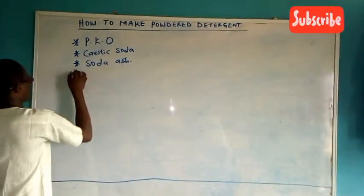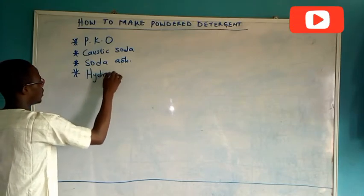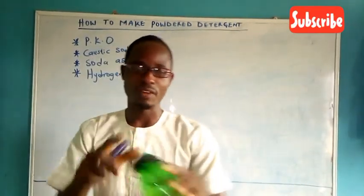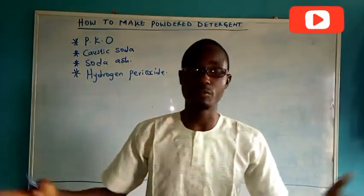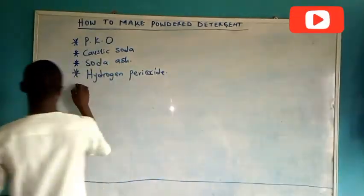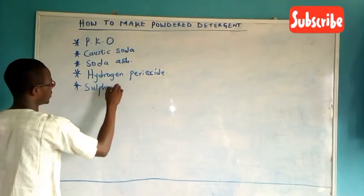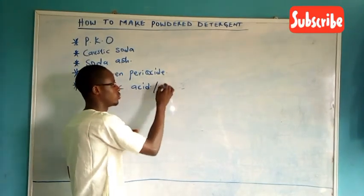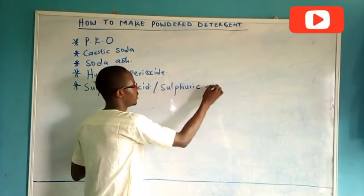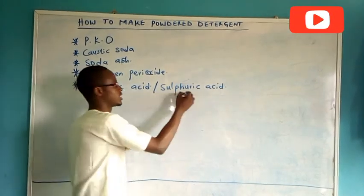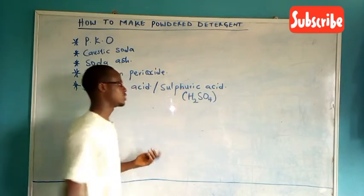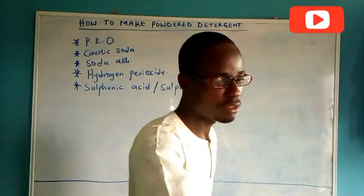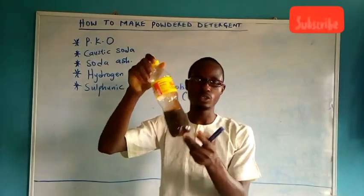Then we have hydrogen peroxide. Hydrogen peroxide is a liquid, and we have it here. We are going to still talk about the function of all these components. Then we have sulfonic acid. Sulfonic acid is different from sulfuric acid. We also have sulfuric acid, and we can actually use either one of them. Sulfuric acid is colorless and is regarded as H2SO4, but you can only use it in place of sulfonic acid if sulfonic is not readily available. The best one to use is sulfonic acid — it has a kind of honey color.